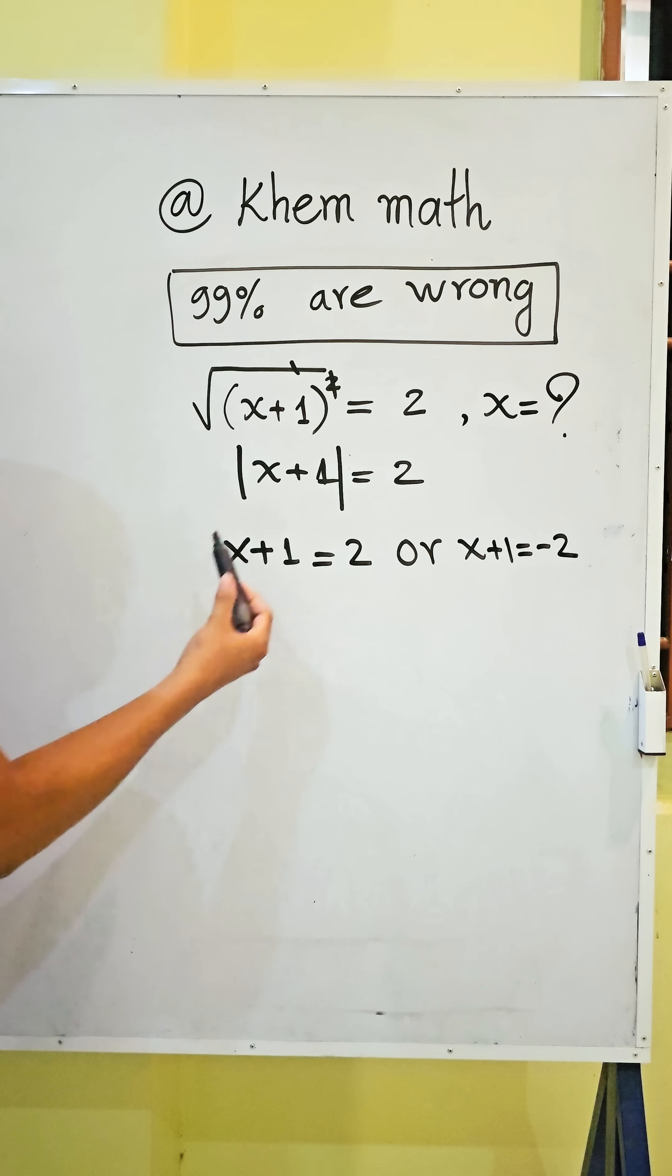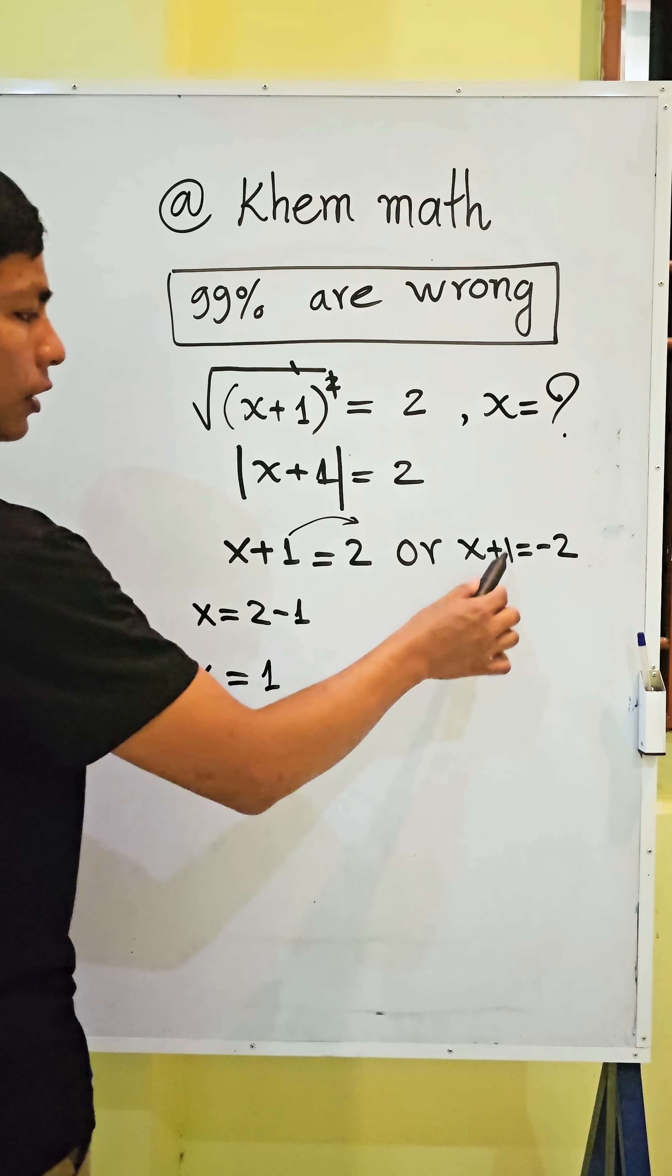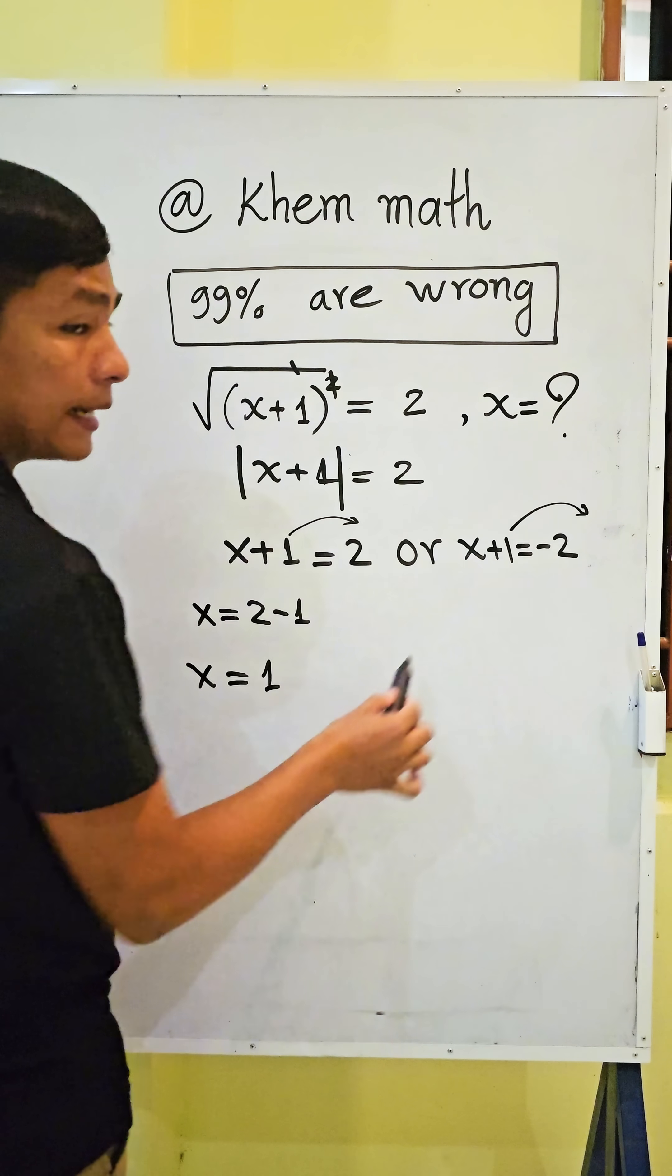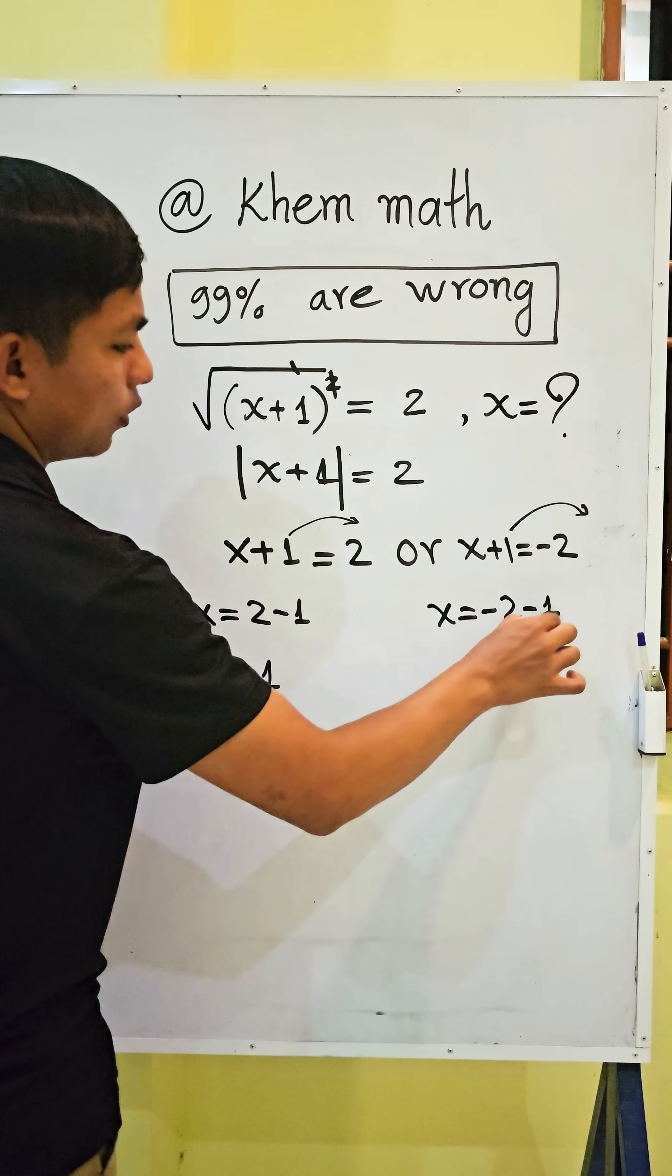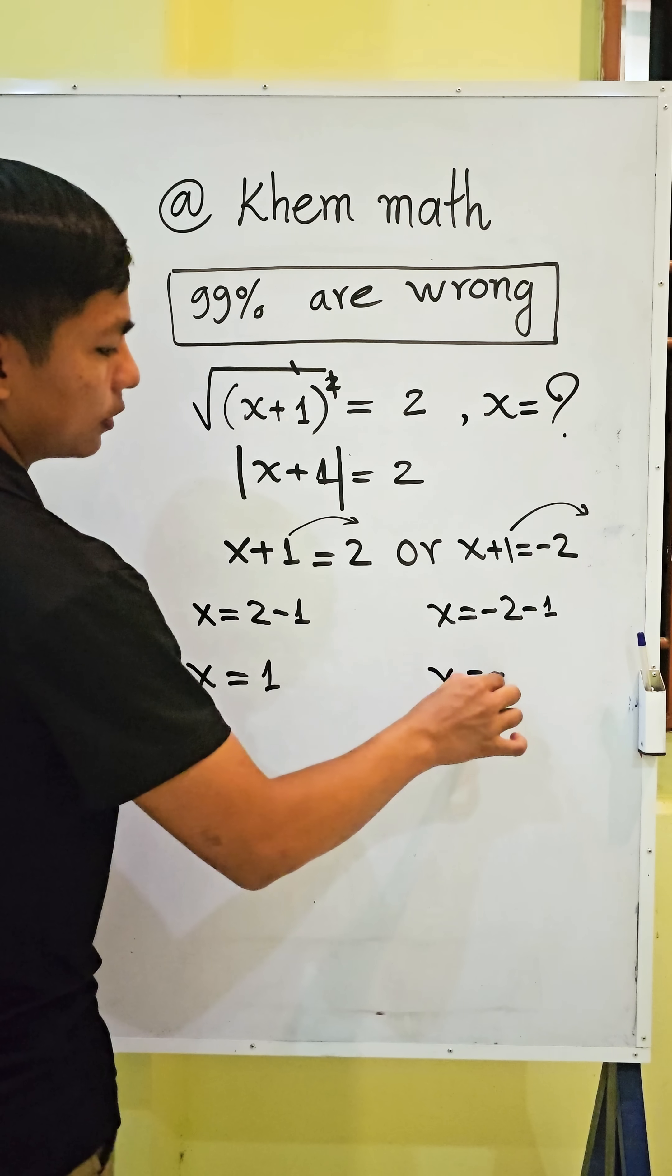Okay, and then we change 1 to the right hand side. We get x equal 2 minus 1 and we get x equal 1. And here we change 1 to the right hand side. We get x equal negative 2 minus 1 and x equal negative 3.